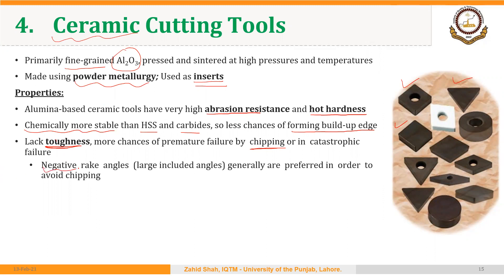Negative rake angles or large included angles are preferred in order to avoid chipping. As we saw in the case of HSS, generally positive rake angles are used because of the high toughness of HSS as compared to carbides and ceramic cutting tools.